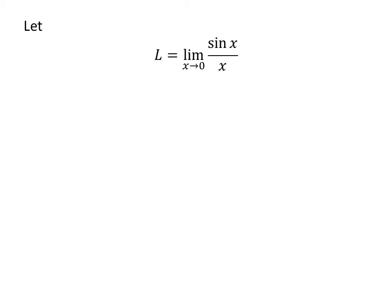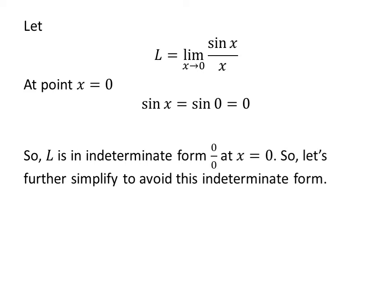Let us assume L is the limit of sine of x upon x as x approaches 0. As x approaches 0, sine of x approaches 0. So we can see that the limit L is in indeterminate form 0 upon 0. Let us try to further simplify the limit to avoid this indeterminate form.